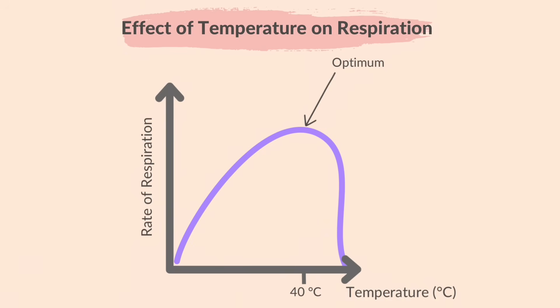The time taken for colour change can be converted into rate of respiration with the formula: rate is equal to 1 divided by time. A graph like this may be observed with the results of this experiment.